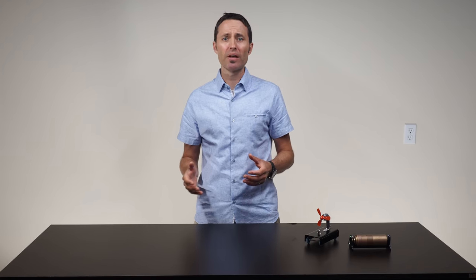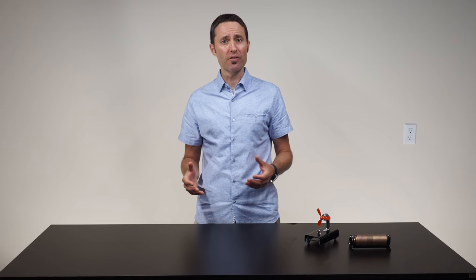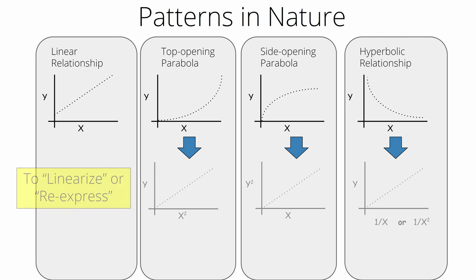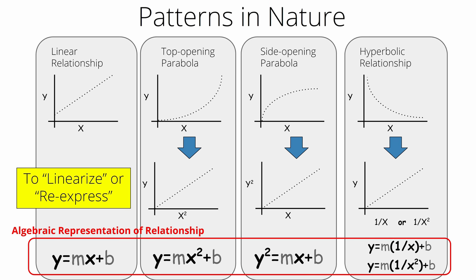If the graph appears linear, the students can simply add a linear fit and write the corresponding linear equation as they have done before. The shape of a graph can be changed by simply modifying the values on either the x- or y-axis. Here are several graphical trends commonly found in nature, and here are the ways in which these common graphical trends can be linearized. A linear fit of the re-expressed graph can be used to write the algebraic equation showing how the two variables are related.